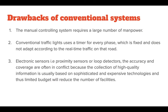All of these systems have some drawbacks. The manual controlling system requires a large number of manpower. Conventional traffic lights use a timer for every phase which is fixed and does not adapt according to the real-time traffic on that road. With electronic sensors — that is proximity sensors and loop detectors — the accuracy and coverage are often in conflict, and for sufficient coverage a lot of sensors are required. These sensors are quite expensive.